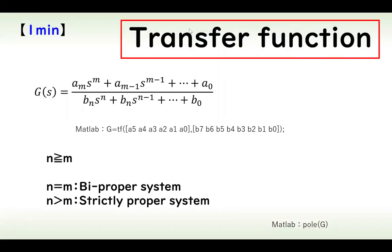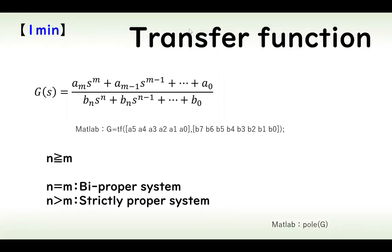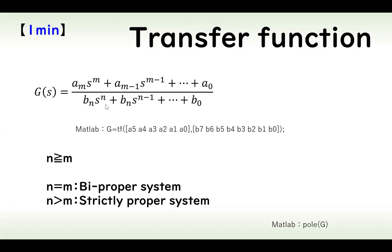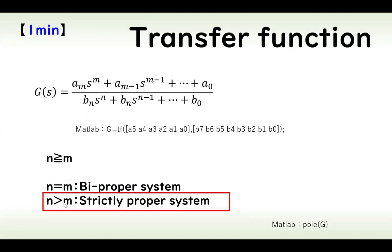Transfer function plays an important role in control engineering and control theory. The form is given by an equation where g is the transfer function, and the denominator and numerator are given as polynomials of s. When n equals m, this is known as a bi-proper system, and when n is larger than m, the transfer function is a strictly proper system.